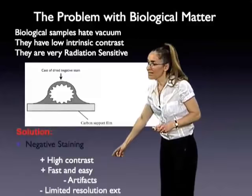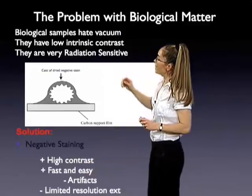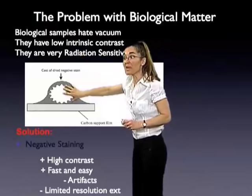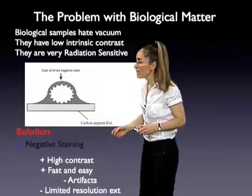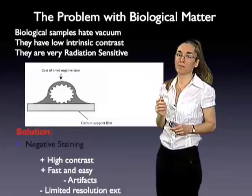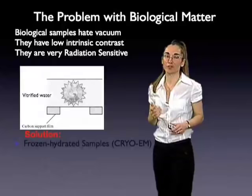There are minuses, of course. The big minus is that artifacts are really possible — in some cases the stain cannot penetrate inside the protein, or as you dry the stain, the protein structure may collapse. Even if you have very good preservation, the resolution is always limited, because as you dry the stain it forms little grains, and that's the ultimate size of anything you're going to be able to see, which is typically about 15 angstroms.